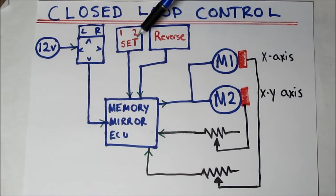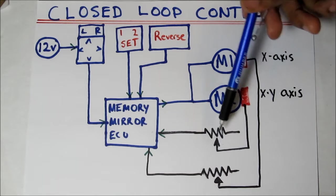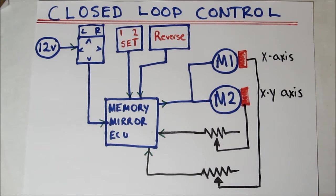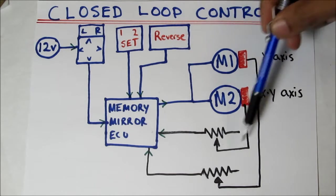When a memory position is selected, the memory mirror ECU keeps sending a signal out to the motor until the variable resistor determines that the mirror has reached the exact position that's desired. This is called a closed loop control system where the current position of the mirror is always monitored.